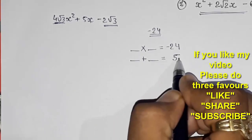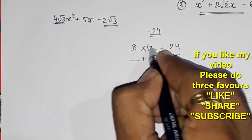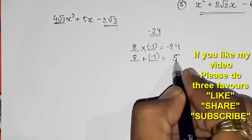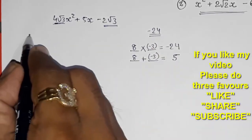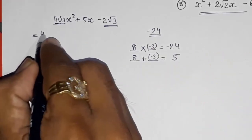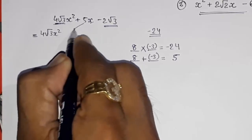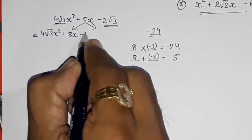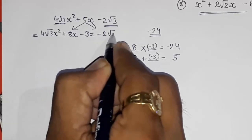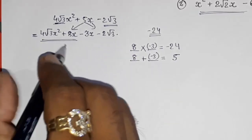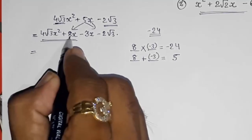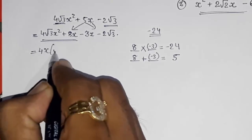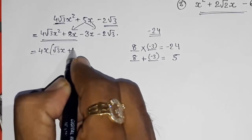The factors are 8 and 3: 8 × 3 = 24, and 8 - 3 = 5. So 8 × (−3) = −24 and 8 + (−3) = +5. Now split the middle term as +8x − 3x, giving 4√3x² + 8x − 3x − 2√3. From the first two terms, 4 and x are both common, so we take out 4x, leaving (√3x + 2).